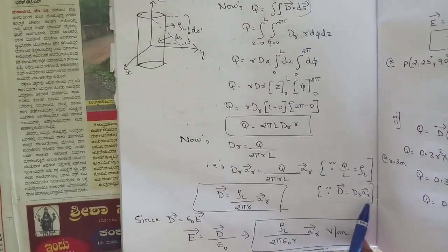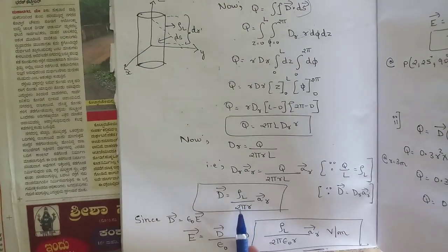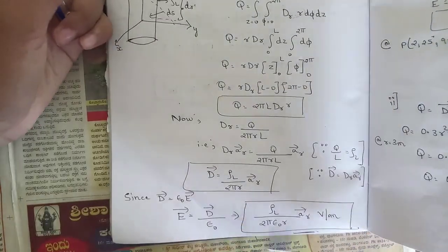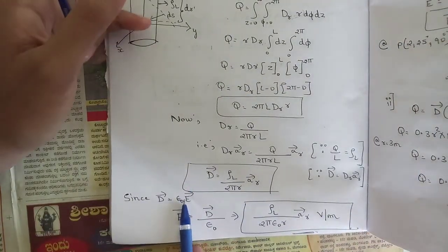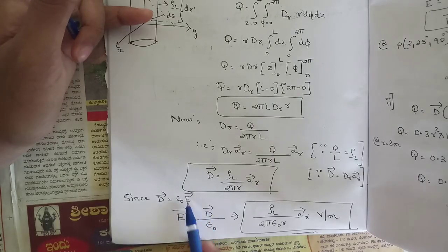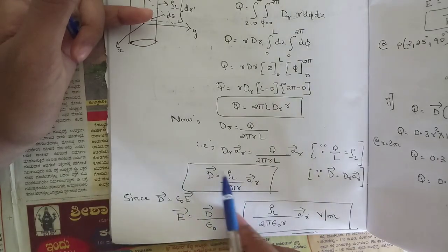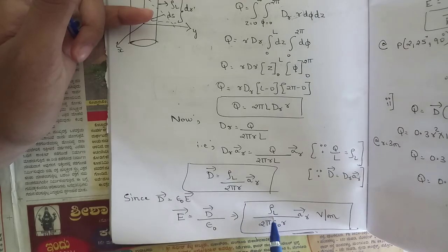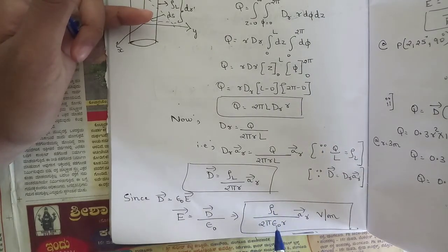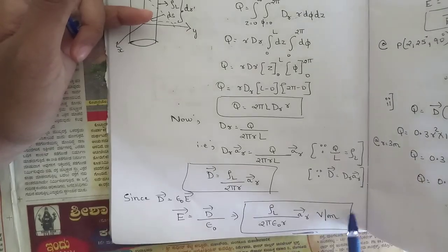Since D equals Dr âr, we get D equal to ρl divided by 2πr into âr. Using the relationship D equals ε₀ times E (for free space), E equals D divided by ε₀. Therefore, the expression for electric field intensity is E equals ρl divided by 2πε₀r âr volts per meter.